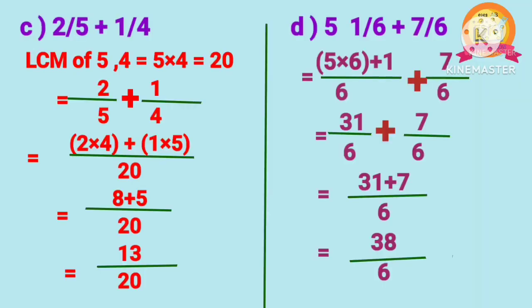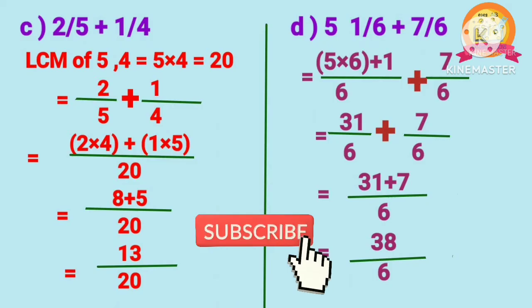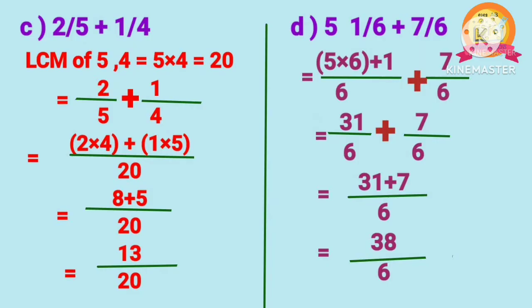Problem C: 2 by 5 plus 1 by 4. The denominators of both fractions are different — 5 and 4 — so we should calculate the LCM. LCM of 5 and 4 is 20. After calculating the LCM, we can add the fractions, and we get 13 by 20.